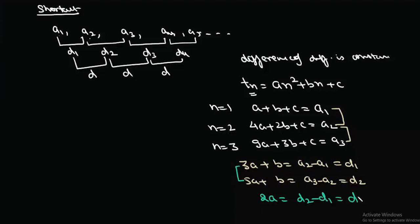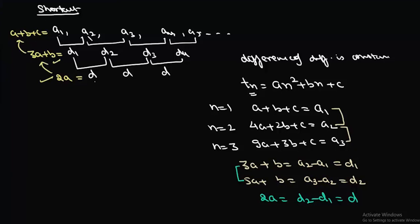The shortcut is: once we have the series, we find their differences and successive differences. The constant difference d equals 2a, so we write 2a = d. Then d1 = 3a + b, and a1 = a + b + c. From these we get a, then b, then c.